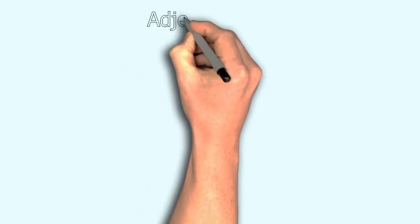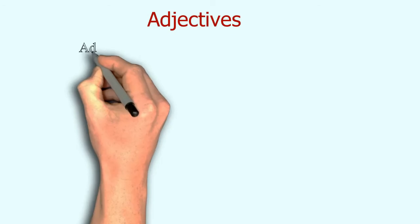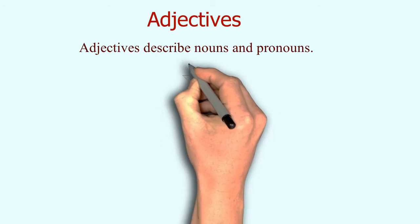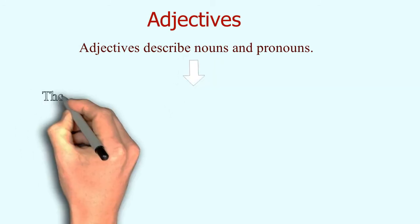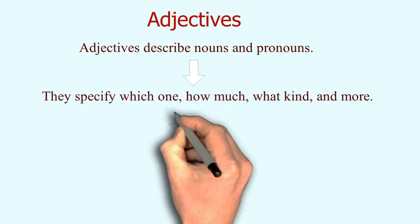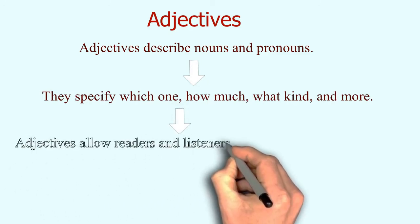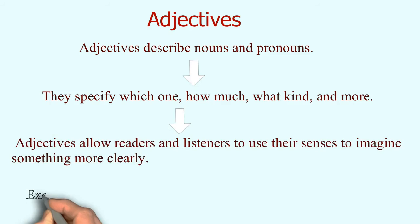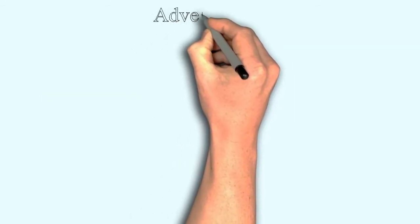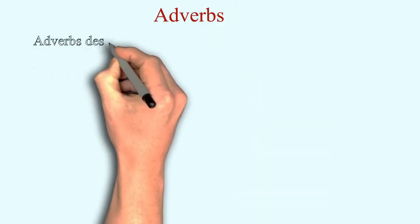Adjectives basically describe nouns and pronouns. They specify which one the noun is, how much, what kind of particular noun, and answer other such questions — they give more clear information about nouns. For example: hot sun, lazy boy, funny girl — in all of these, the describing words are adjectives.